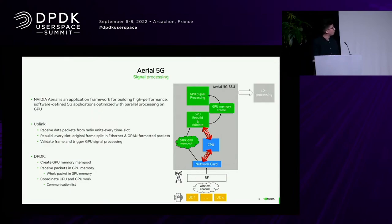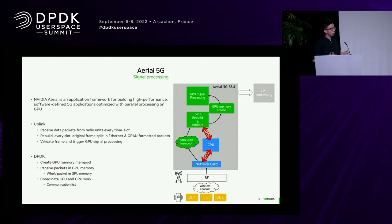Here's how it works: wireless 5G clients send data to radio units. Radio units send data to the Arial 5G baseband unit, which — thanks to DPDK — creates a DPDK GPU mempool and receives packets directly in GPU memory. The CPU uses DPDK to ask the network card to receive packets in GPU memory, but also to wake up the GPU preprocessing in the RFG, which is responsible for reconstructing the original payload that was framed across multiple buffers, validating the rebuilt payload, and waking up the actual signal processing.